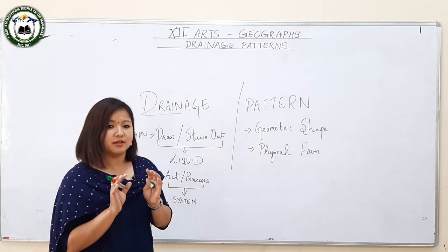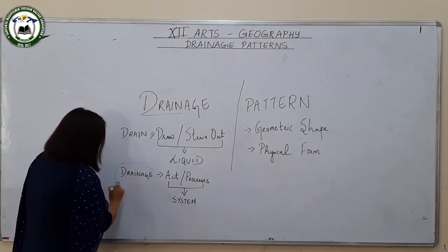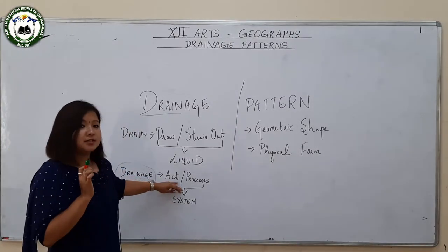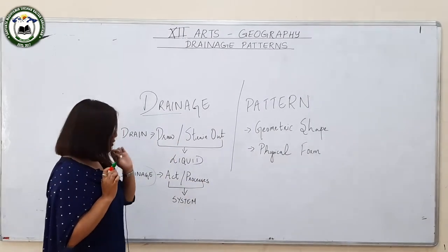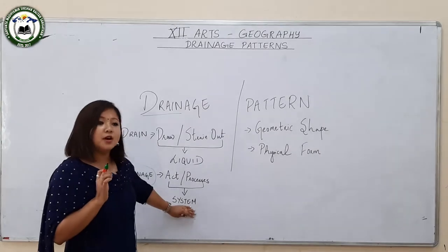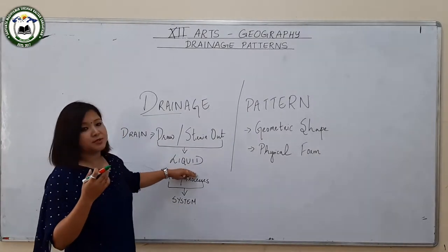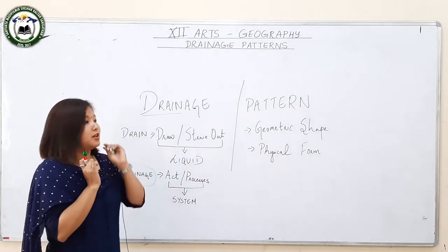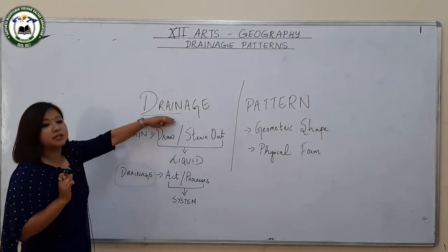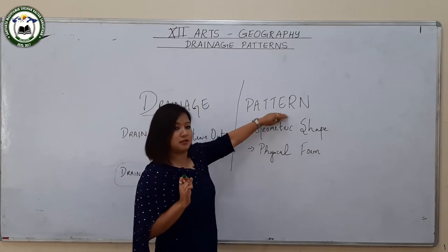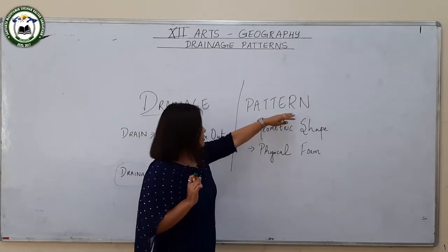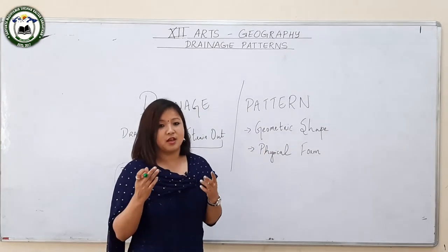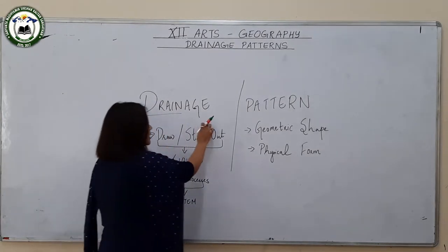The word drainage as a whole tends to explain the act, process, or system by which liquid substances or water are removed from a particular place through a proper channel. The word pattern means a geometric shape or physical form which is visible to us.